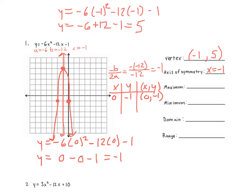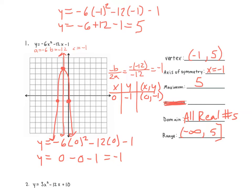Do we have a max or min here? A max. So we can cross out min. What's our max? Five. Remember, our max is going to be our y value. What's our domain? All real numbers. What's our range? Negative infinity to five. Since this graph is going down, it goes to negative infinity, and then our graph ends at five, so our range ends at five.